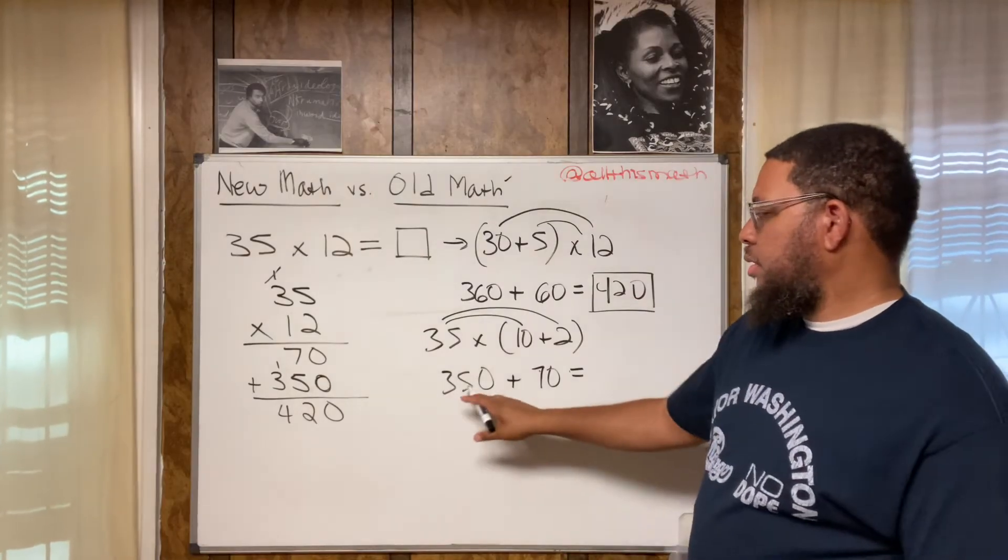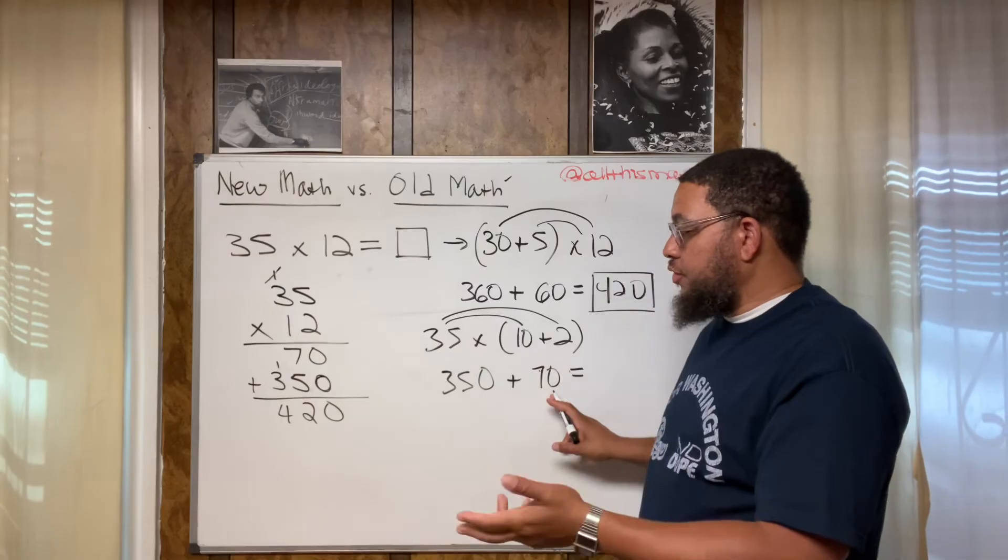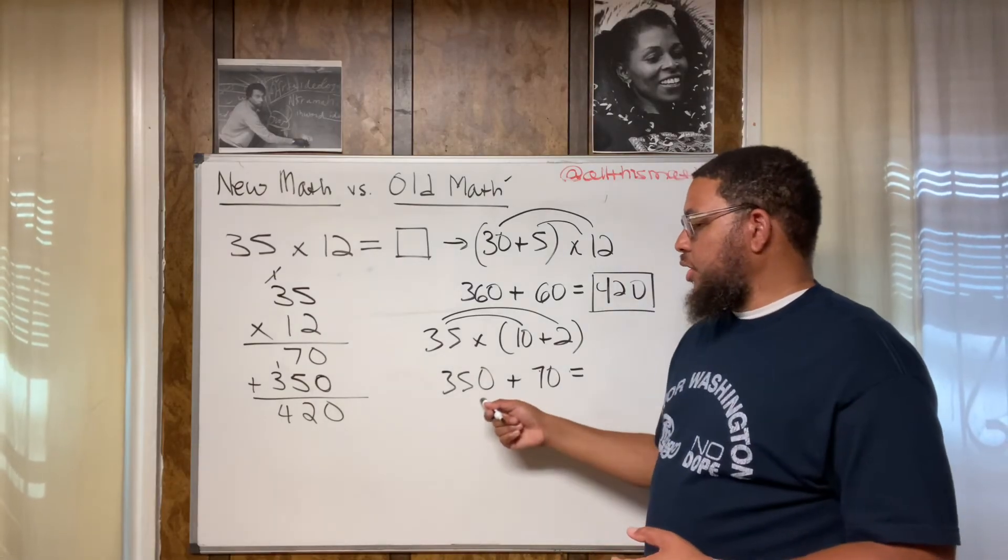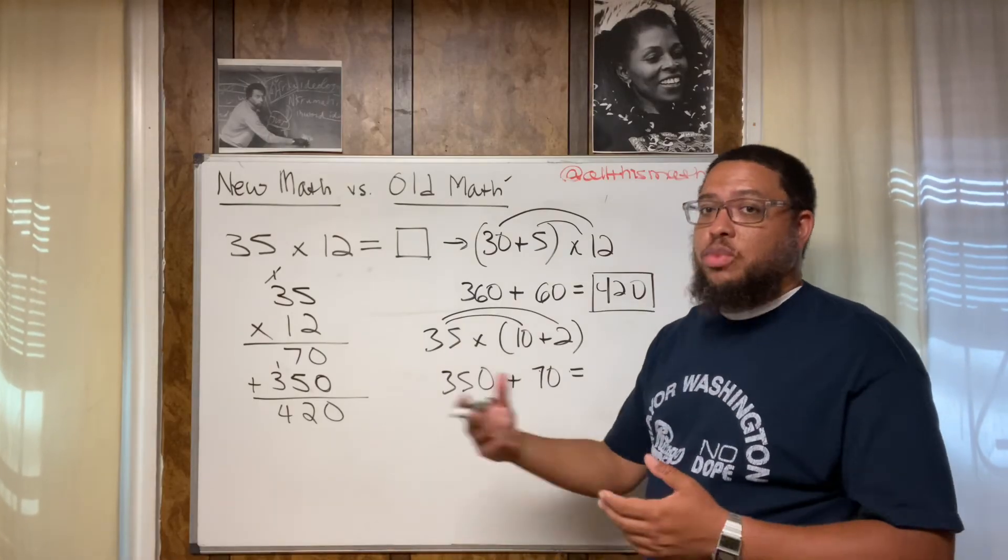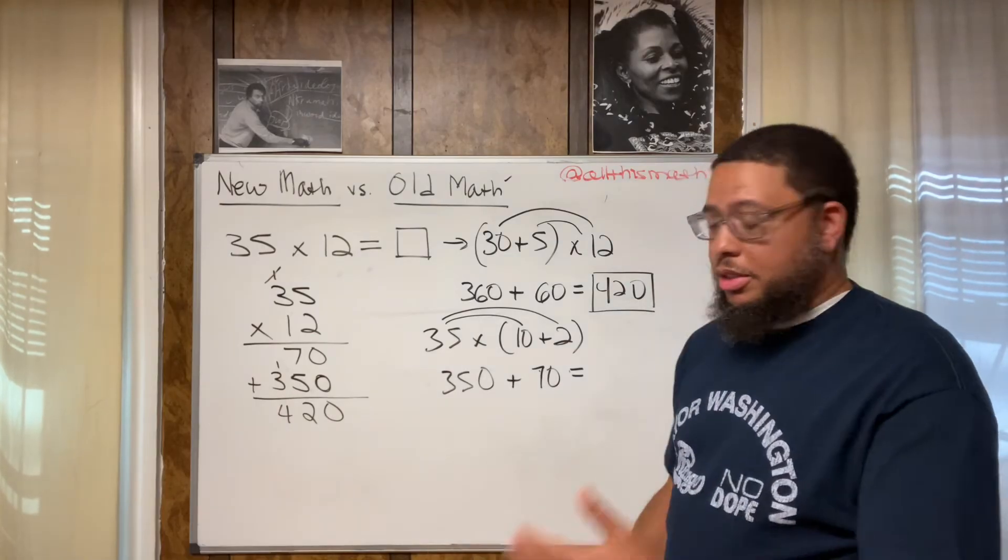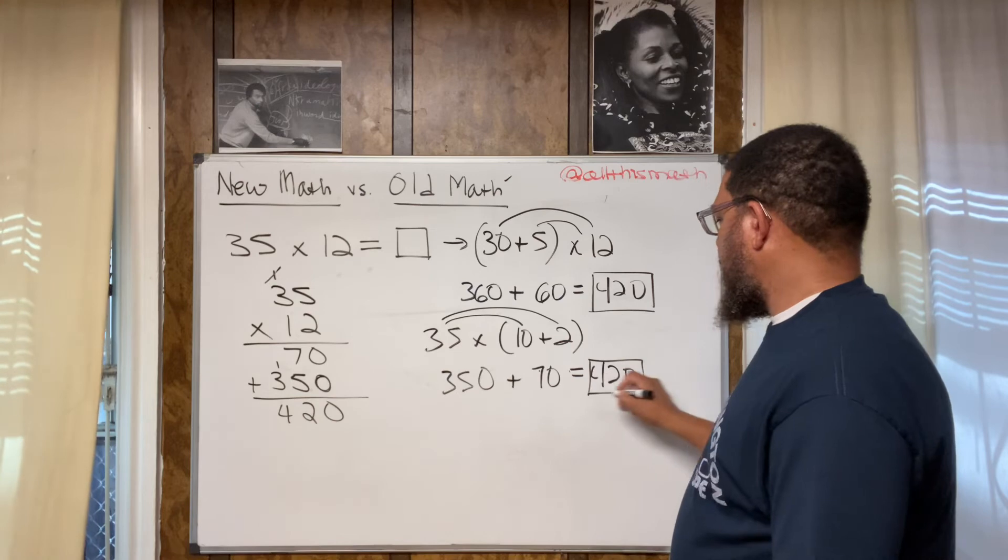And then add these two numbers together. 350 plus 70. You can break the 70 down. If you're doing this mentally, you might want to break the 70 down into 50 and 20. Now, why would I do 50 and 20? Well, because I know 350 plus 50 is going to give me 400. And then if I got 20 left over, then I'm going to just do 400 plus the 20 to get 420.